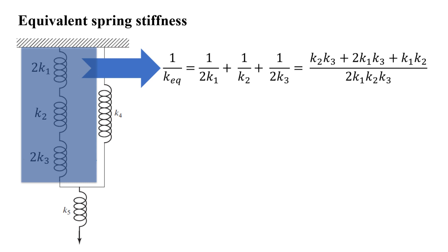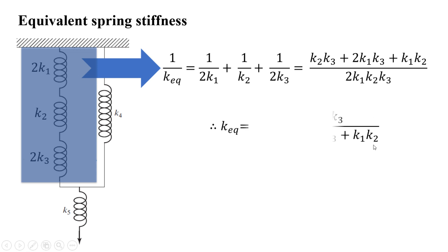For a series arrangement, 1 upon k_equivalent equals 1 upon 2k1 plus 1 upon k2 plus 1 upon 2k3. Taking 2k1·k2·k3 as the LCM, the numerators become: k2·k3 for the first term, 2k1·k3 for the middle term, and k1·k2 for the last term, all divided by the LCM 2k1·k2·k3.